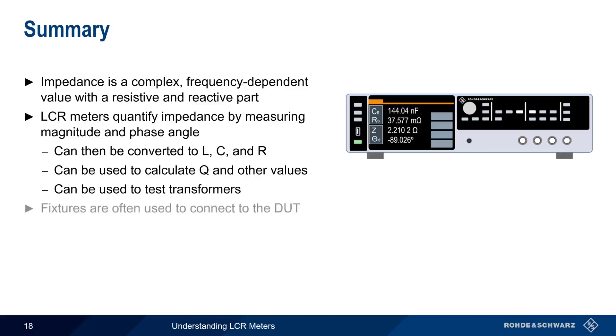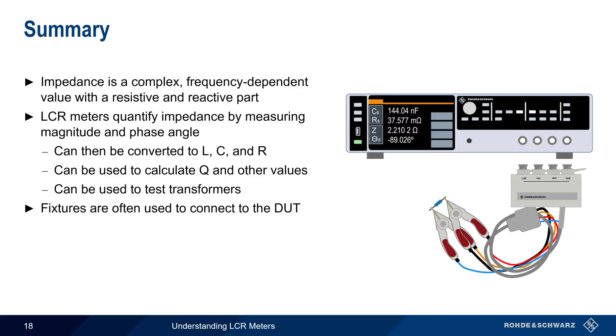In most cases, special fixtures are used to connect to the device under test, and a correction or calibration routine is used to remove the influence of this fixture from the measurement. And lastly, when making measurements with an LCR meter, there are four basic configuration parameters – circuit model, frequency, level, and bias.